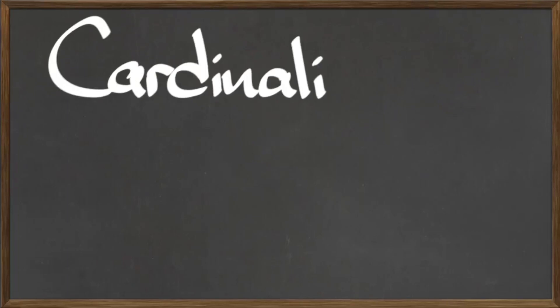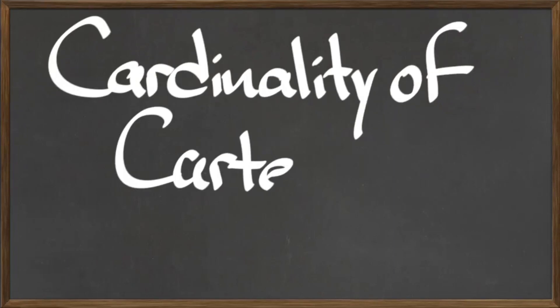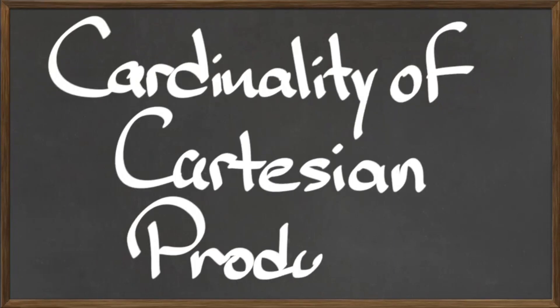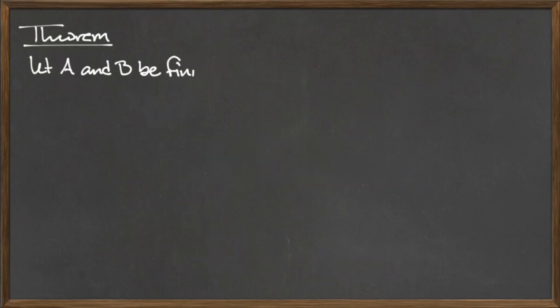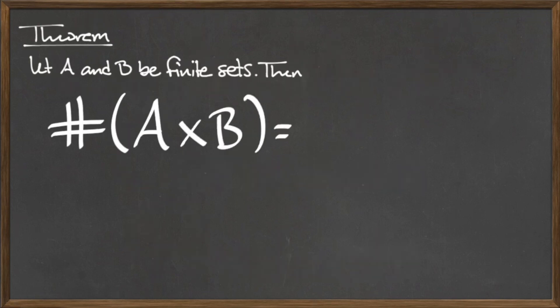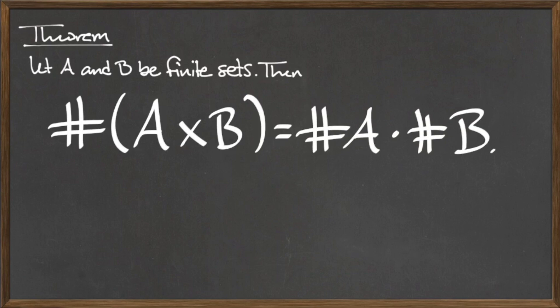In this video, we will discuss the cardinality of Cartesian products. Let A and B be finite sets. Then, the cardinality of the Cartesian product A cross B is equal to the cardinality of A times the cardinality of B.